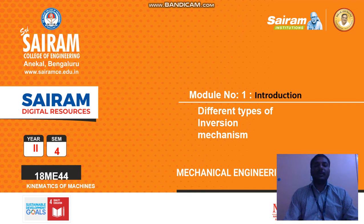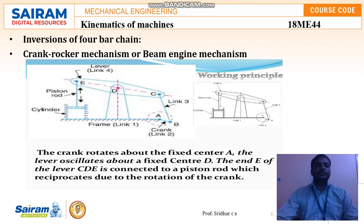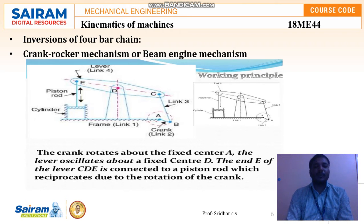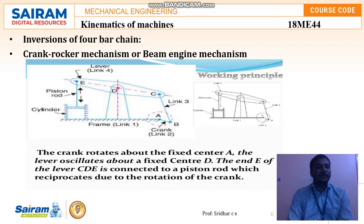We will see some of the different types of inversion mechanisms along with diagrams showing how they convert motion from one form to another. The first type of inversion of mechanism we will see is the crank rocker mechanism or beam engine mechanism. This type of mechanism is mainly used to convert from one form of motion to another in order to perform a given task in any machine.